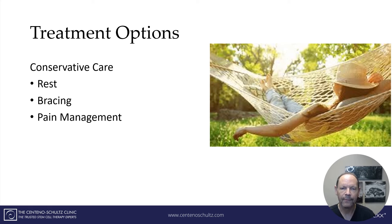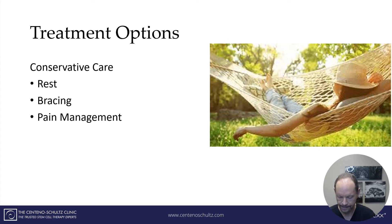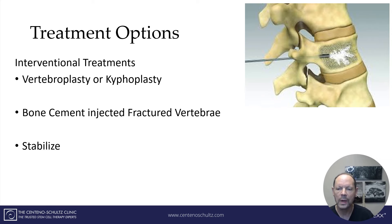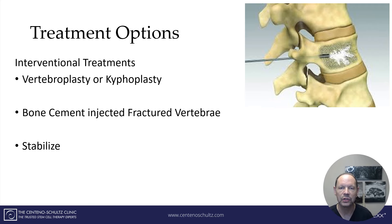Treatment options for conservative care include rest, bracing, pain management, oral medications, and topical medications. When those aren't sufficient, there are interventional or advanced treatment options. There's vertebroplasty and kyphoplasty — in essence, it's a needle through which bone cement is injected into the area of fracture. The goal is to stabilize an inherently unstable spine.